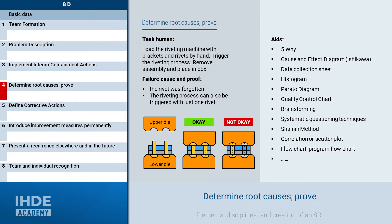Back to our case study with the riveting. The task of one person was to manually equip the riveting machine with the two brackets and the rivets, then start the riveting process by hand, and then remove the riveted assembly and place it in a box. The cause of the missing rivet was that the rivet was simply forgotten by the person. This cause was proven by the fact that it was possible to reenact the riveting process even if a rivet is missing.